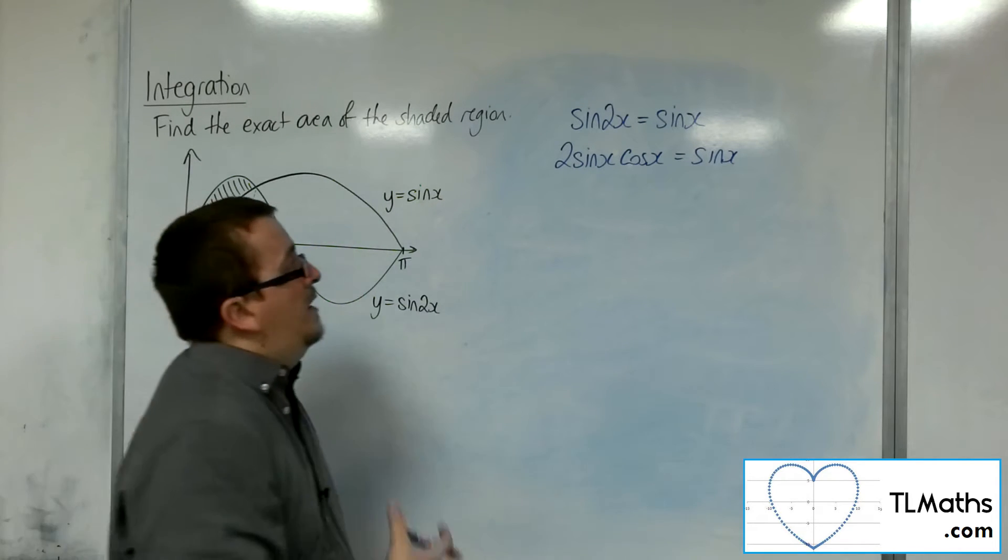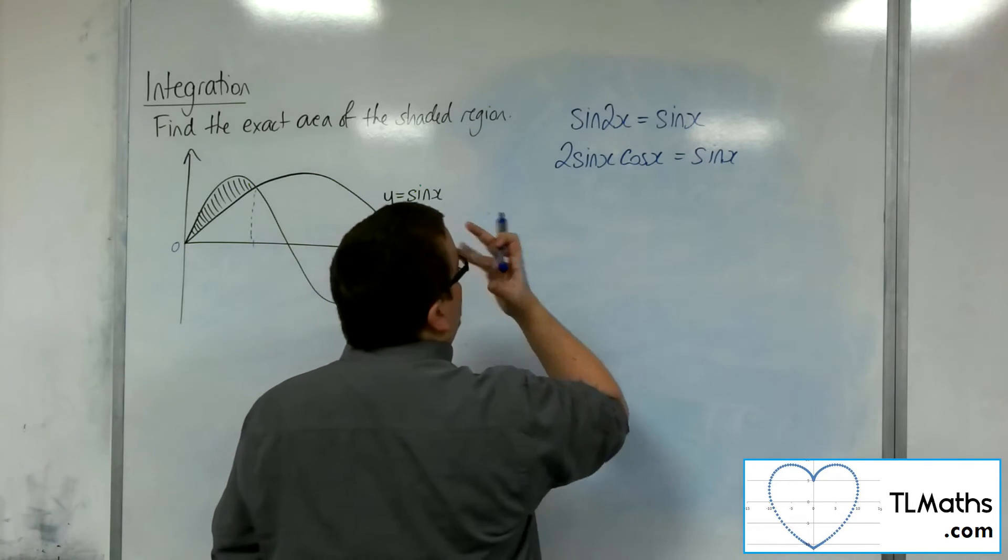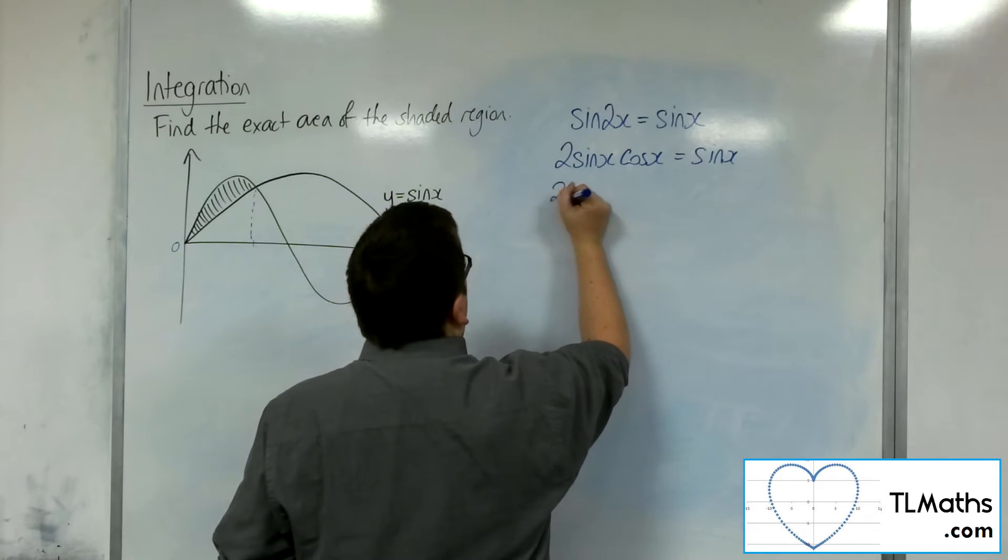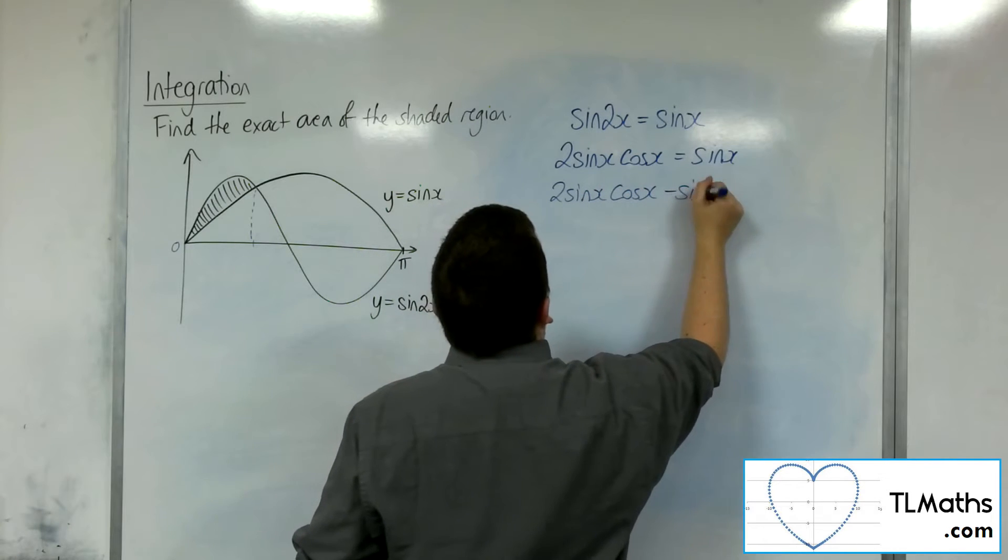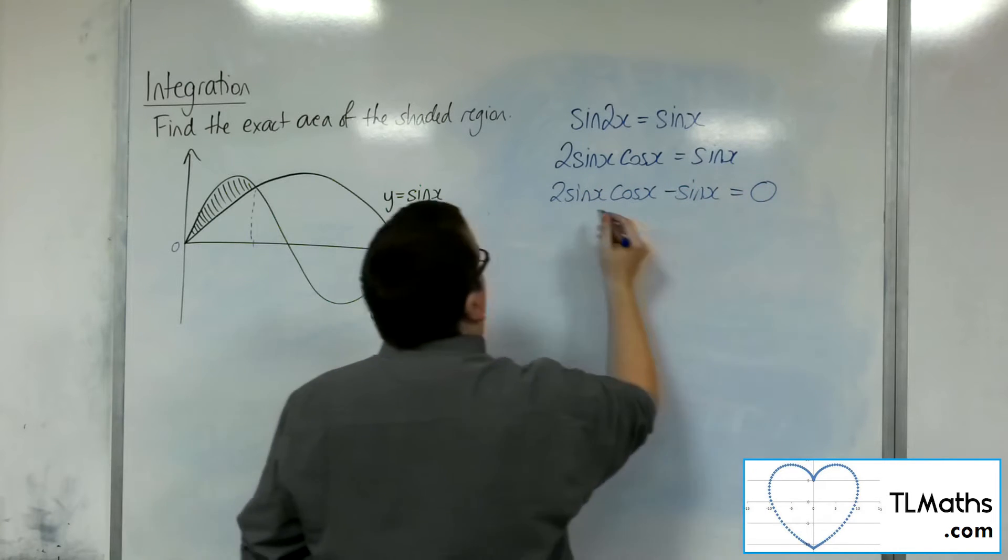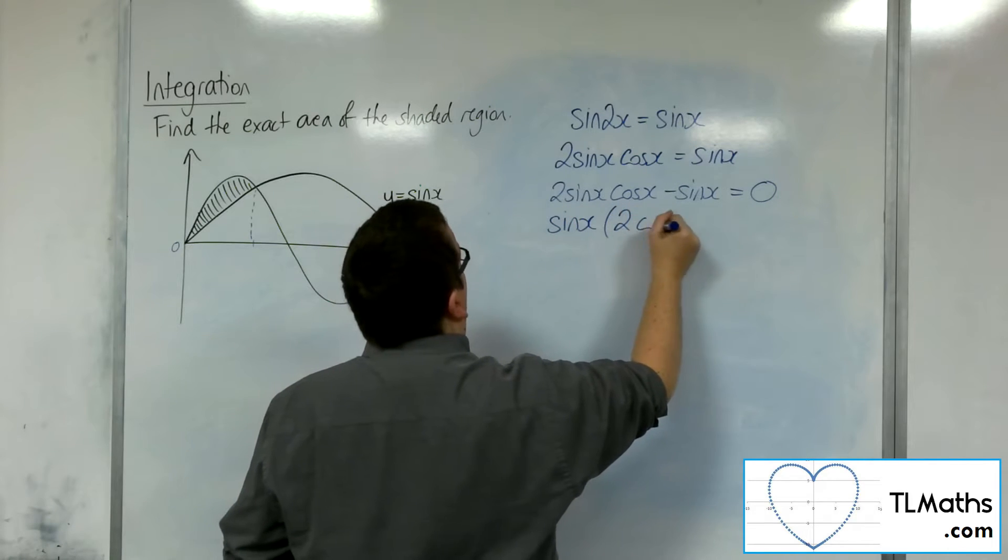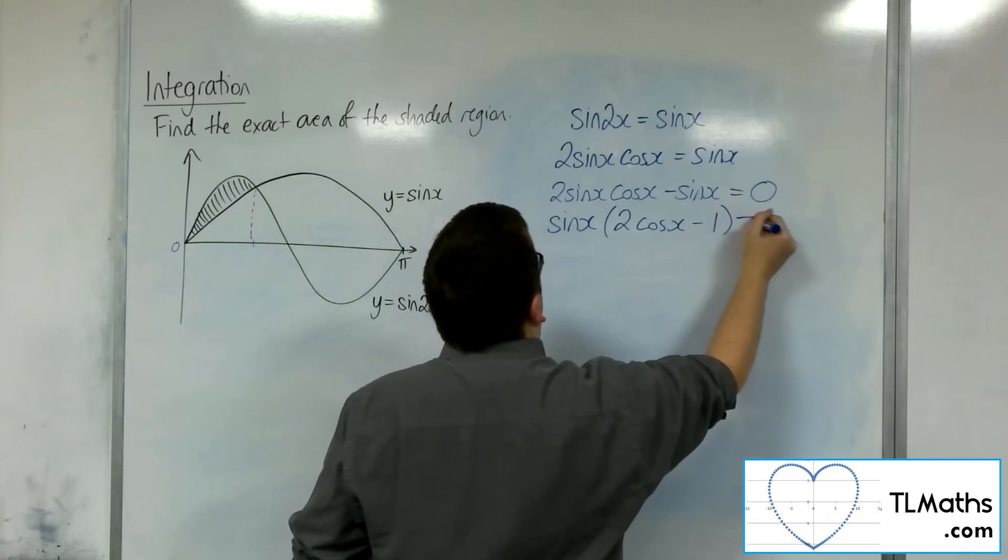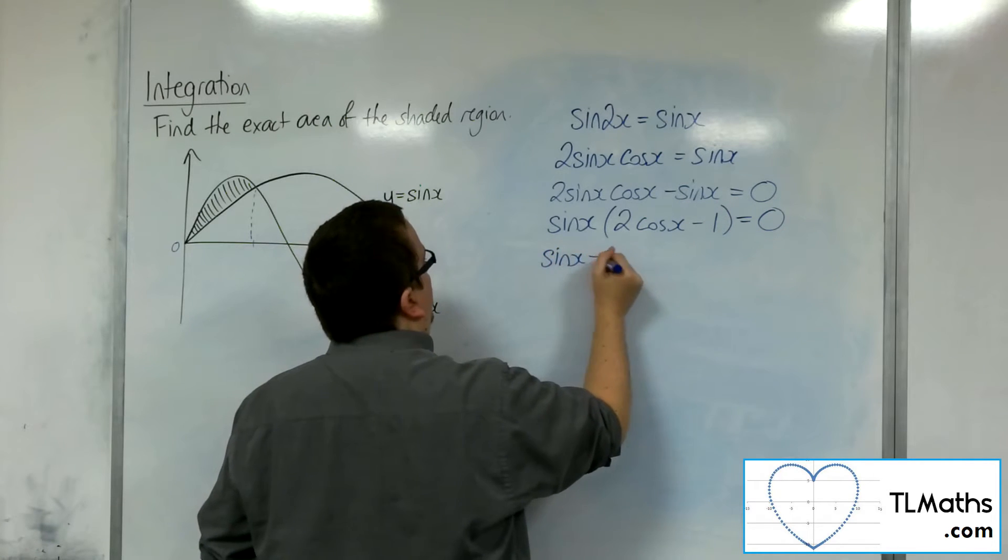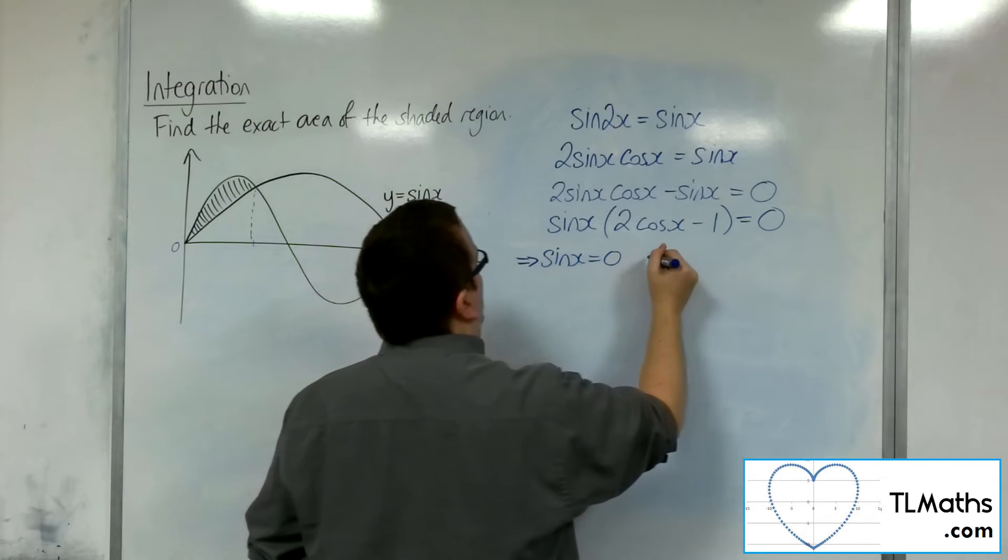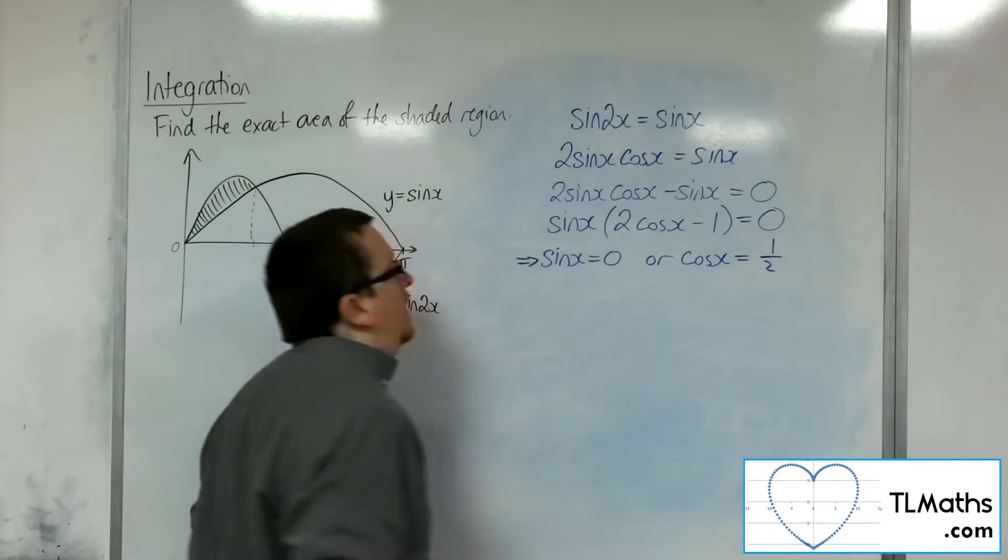So with that step in mind, I should now be able to use my trig knowledge to be able to solve this. So I need to subtract the sine from both sides. You can then factorise the left-hand side like so. So either sine x is 0 or cosine x is 1 half.